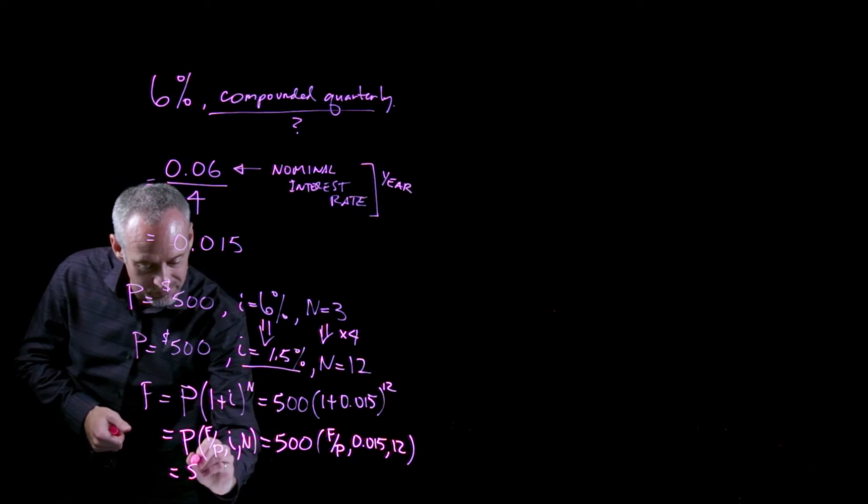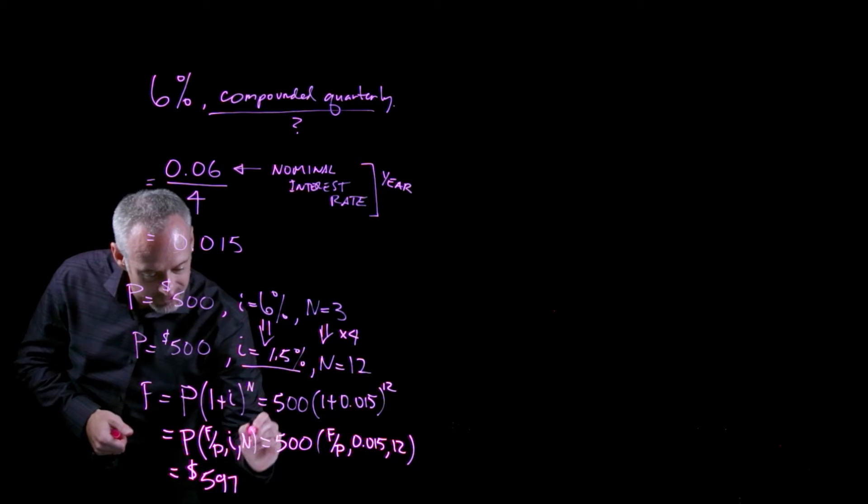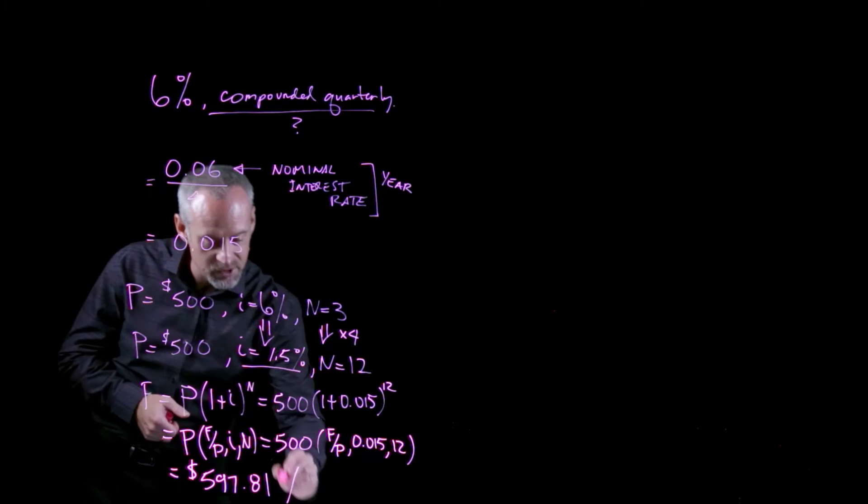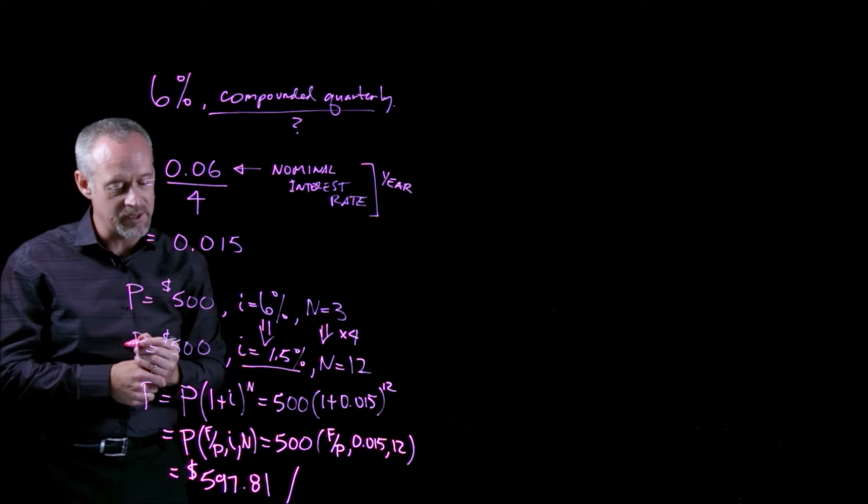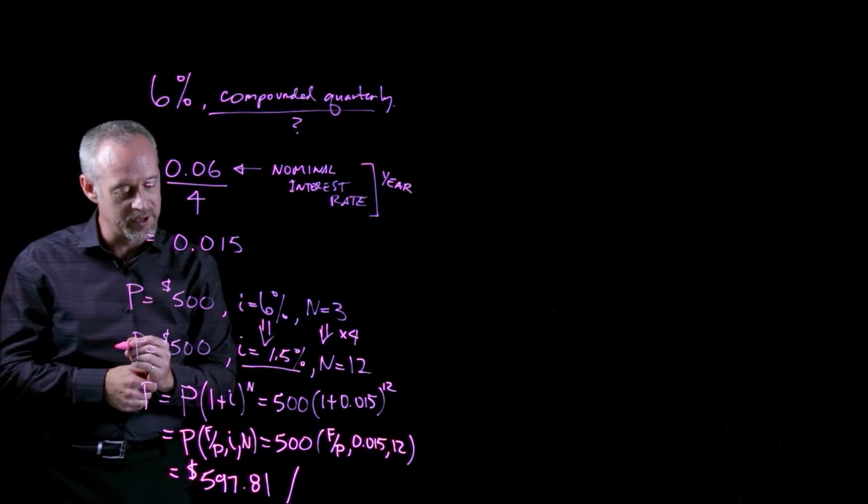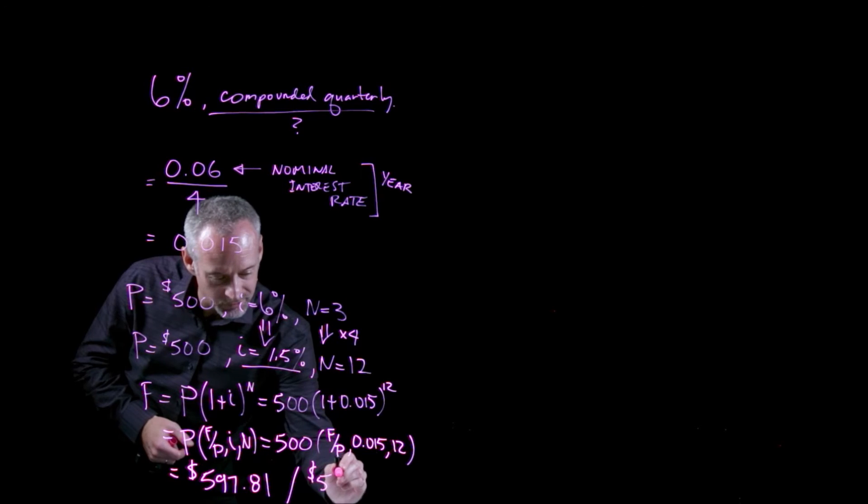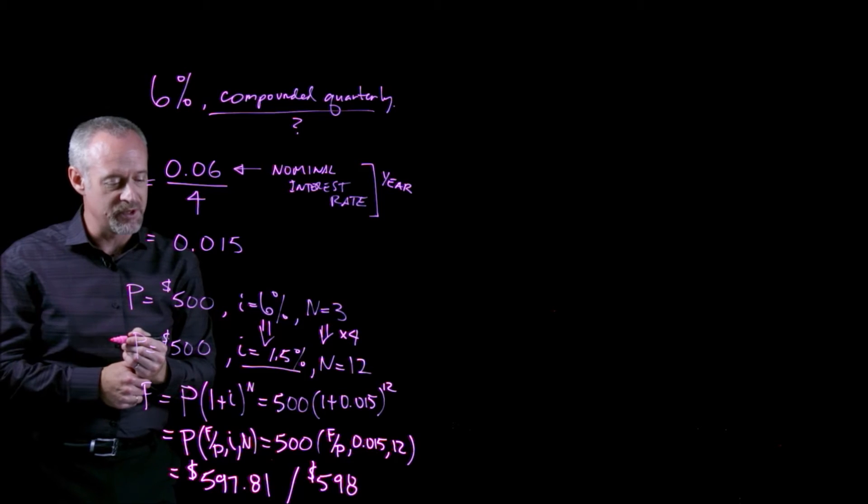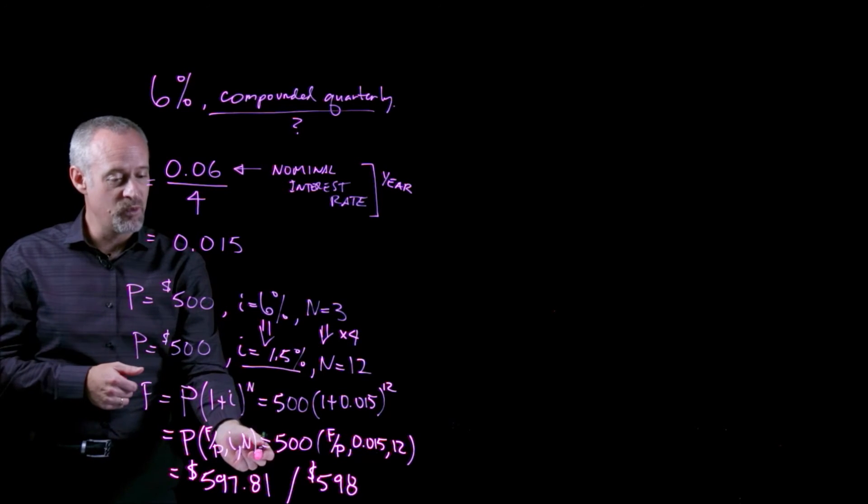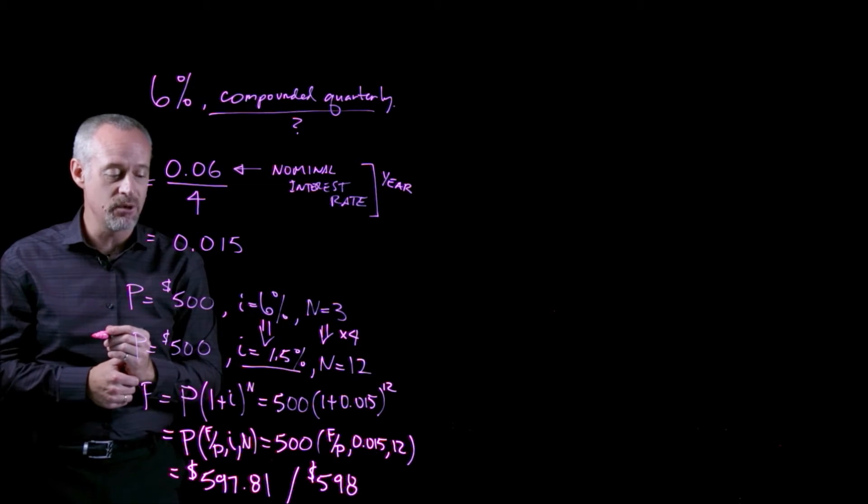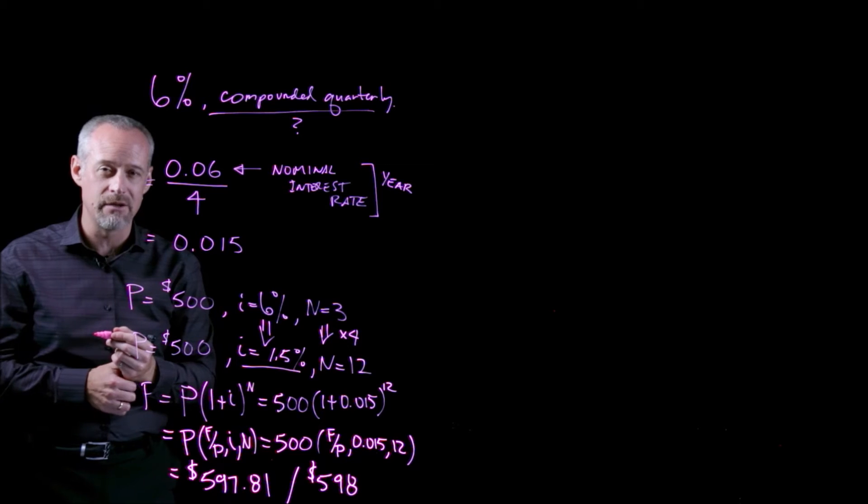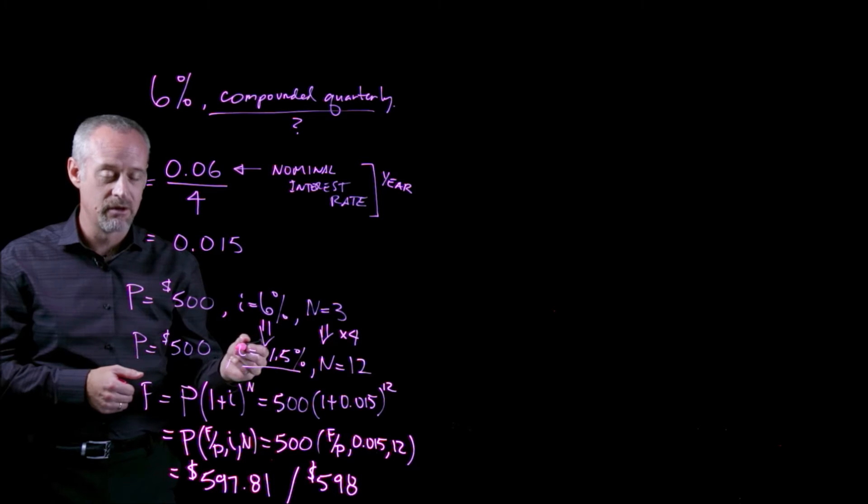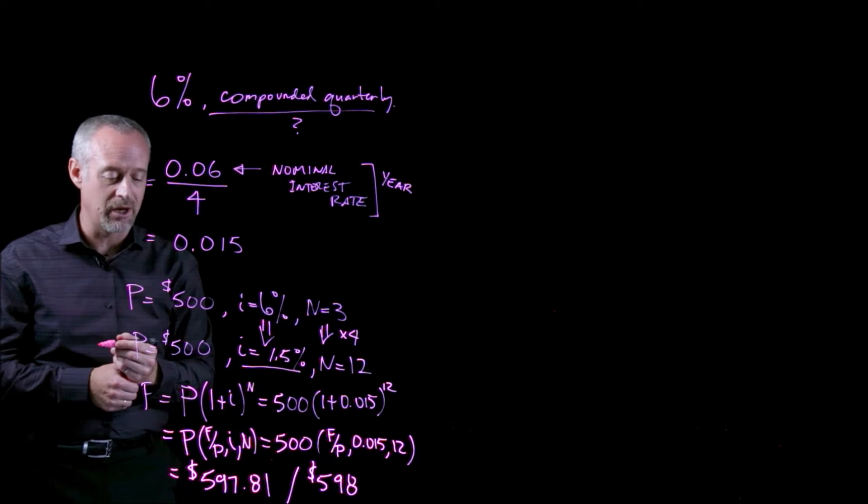And if you work out what this equals, you can do it either by the formula or using the compound interest table, you should end up with a value of $597.81. That's if I use the formula. If I use the compound interest table, because it doesn't have as many places after the decimal as I will get from the formula itself, I actually end up with 598, but close enough for our purposes. Recall that when we did the problem with 6% compounded yearly, that value was 595.5. So you can see the effect of compounding more frequently, we actually get a higher future value of the investment.